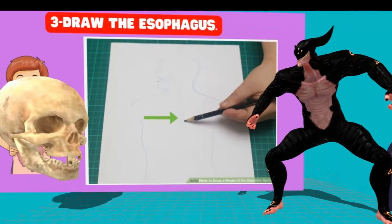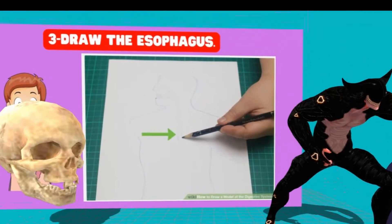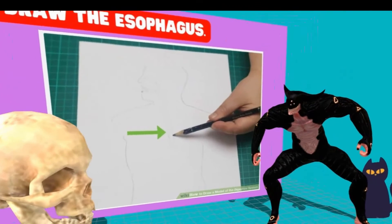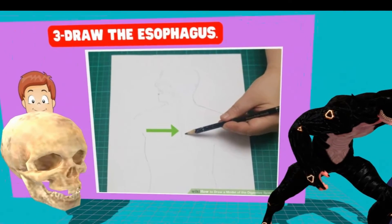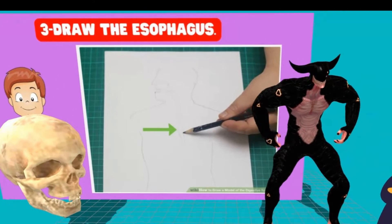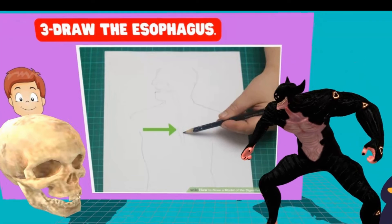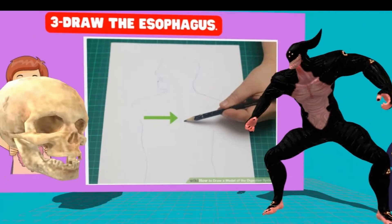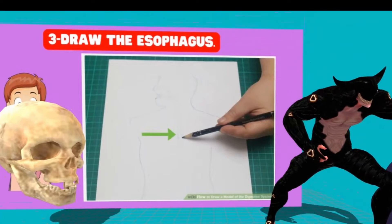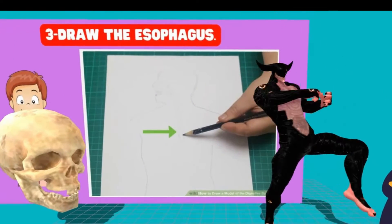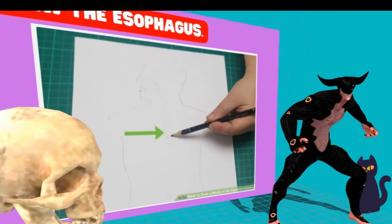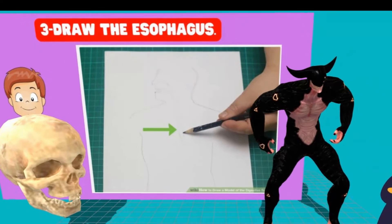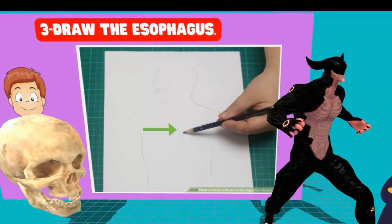Step 3: Draw the esophagus. At the end of the mouth, draw a small tube that extends straight down into the center of your model's torso. It should be fairly narrow, about one-fifth the width of your model's neck. The food moves from the mouth into the esophagus, which carries it down into the stomach. The esophagus is made of smooth muscle that relaxes and contracts to move your food down with a wave-like motion called peristalsis.